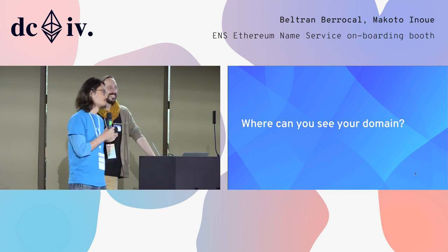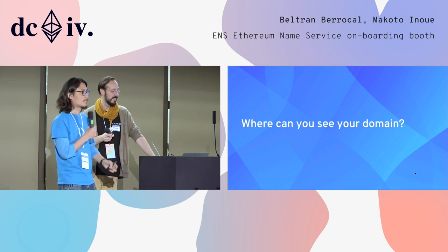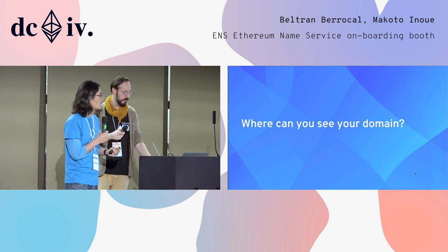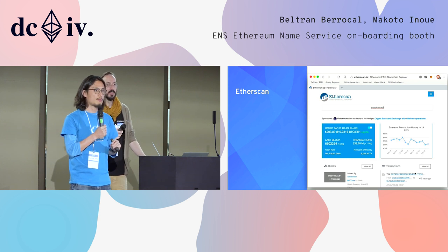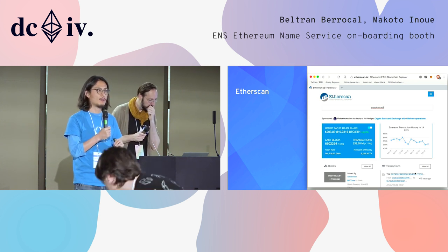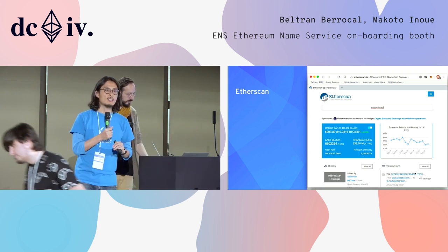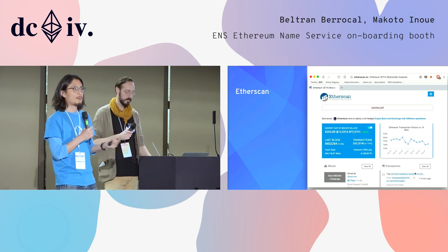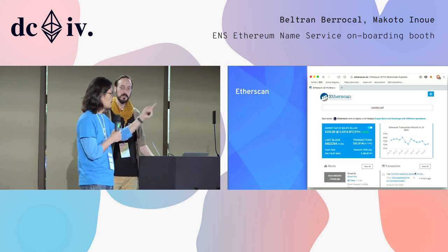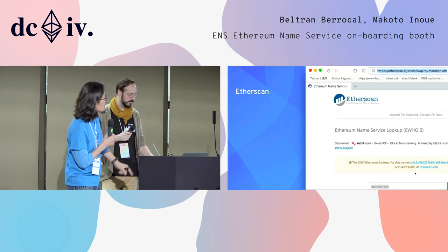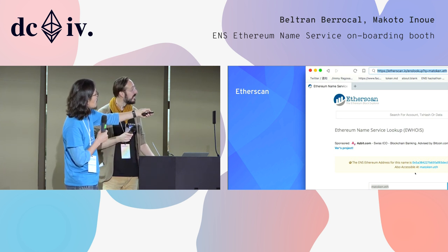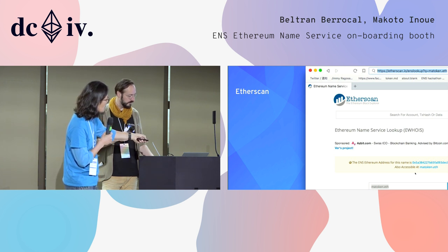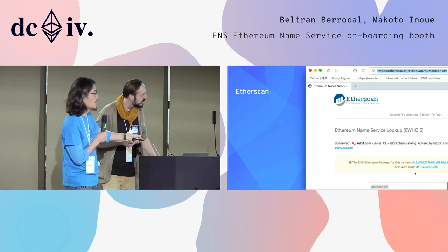There are Status support people here, so we can help. Once you've gone through the process, you want to make sure you actually got your name. The easier place to check is Etherscan. Etherscan is a place where it has all the information about blockchain activities — where you can find transactions, who sent to who. Now you can search with an ENS name. If you put matokun.eth, it does an ENS lookup, and it shows you the Etherscan name address for that one. So you can see the information and who owns it.